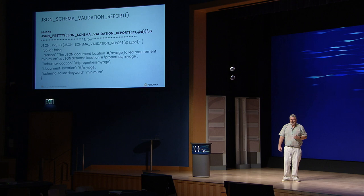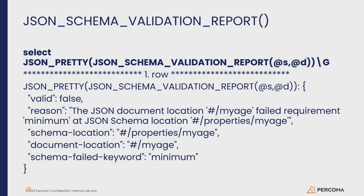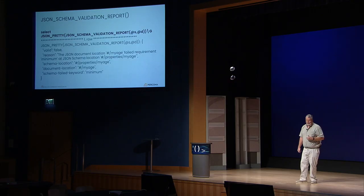Another function that came out at the same time is JSON_SCHEMA_VALIDATION_REPORT. What's really nice about this is that it formalizes the output — it tells you that the document did not get into the database and why. In this case it says the JSON document at location 'my_age' failed requirement 'minimum,' and gives you the rest of the specifications.